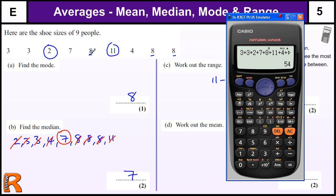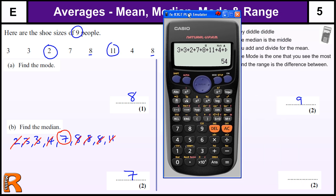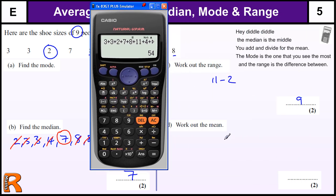So it adds up to 54. And there's one, two, three, four, five, six, seven, eight, nine. We're told there's nine people there, aren't we? So we've got 54 divided by nine, and that should be six. So the mean is six.